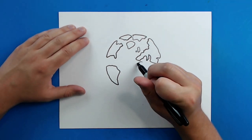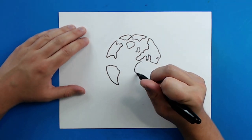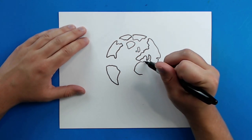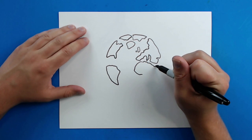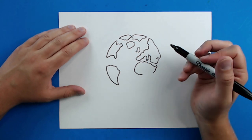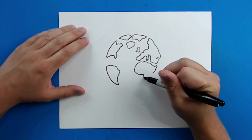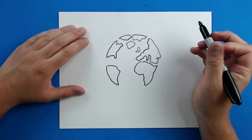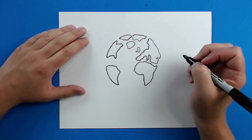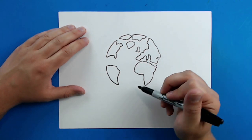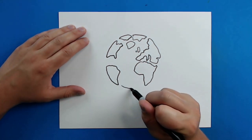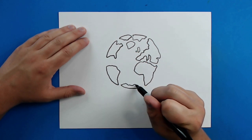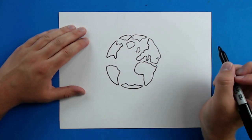Then we'll put Africa right here. So we'll just kind of draw a shape that kind of curves around like this, then make it kind of bumpy. We'll put like a little horn of Africa over here, and then we'll just make it kind of come down here and back up. Then we'll draw some more down here — make another one of these kind of bumpy lines.